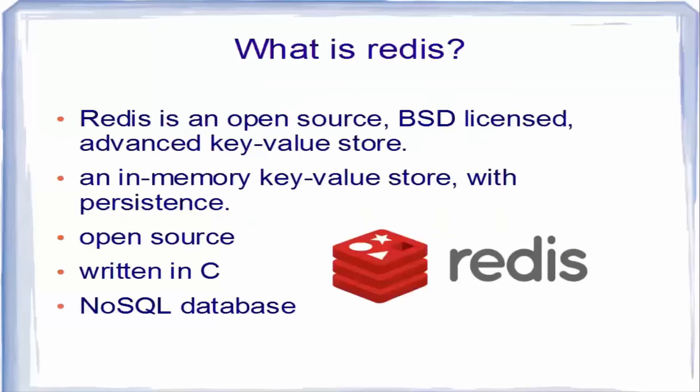First of all, what is Redis? Redis is an open source BSD licensed advanced in-memory key-value store where keys can contain data structures such as strings, hashes, lists, sets, and sorted sets. It's an in-memory key-value store with persistence, meaning Redis can be used as a database, a caching layer, or a message broker.